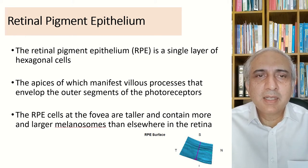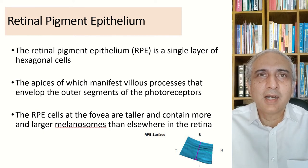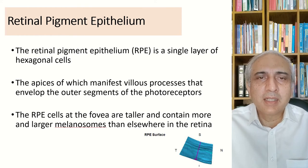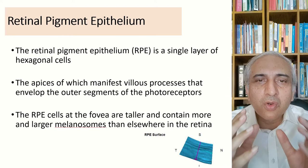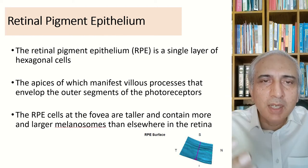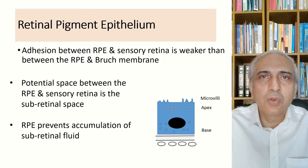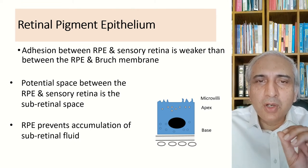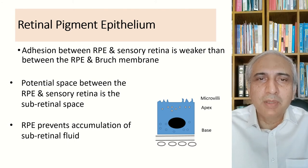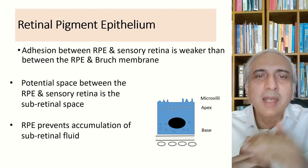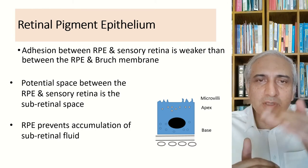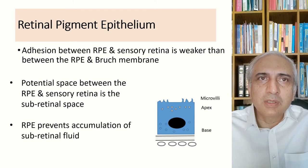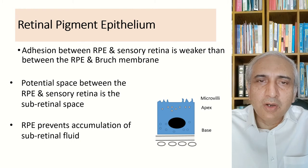The retinal pigment epithelium is a single layer of hexagonal cells whose apices manifest villous processes. RPE cells at the fovea are taller and contain more melanosomes than elsewhere because more cones are present there. The adhesion between the RPE and the sensory retina is weaker than between the RPE and Bruch's membrane. The potential space between RPE and sensory retina is the sub-retinal space, where fluid accumulates in retinal detachment or central serous retinopathy.